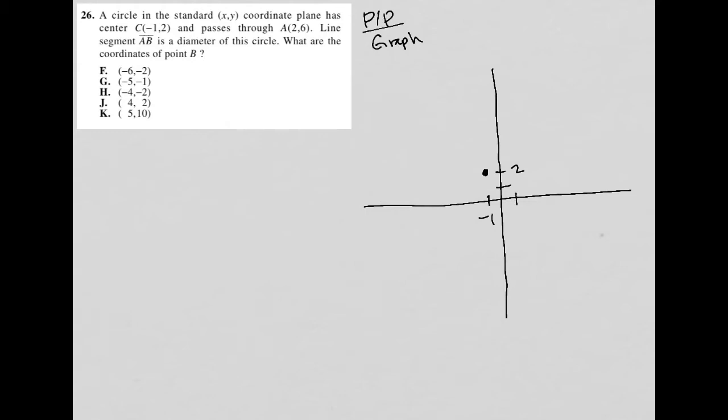So 1, 2, and 3, 4, 5, 6. So (2, 6) is here. This is not going to be the greatest circle in the world, but at least it gives me some sense of how this circle looks.